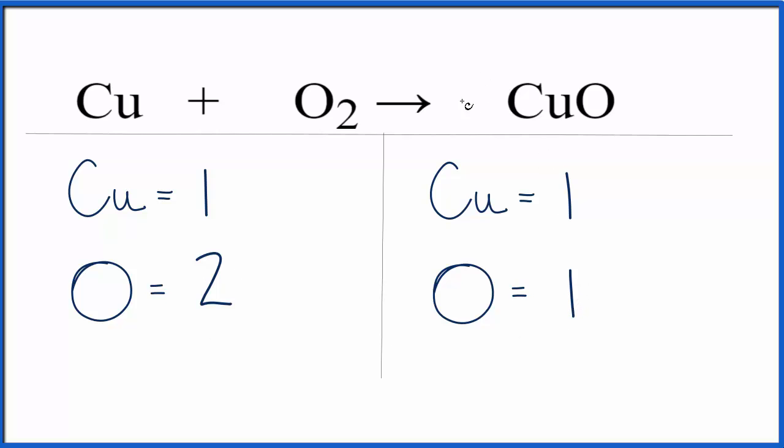What I can do is change the coefficient in front of the CuO. If I put a 2 right here, now the 1 oxygen times the 2, that'll give me 2 oxygens, and the oxygens are balanced.